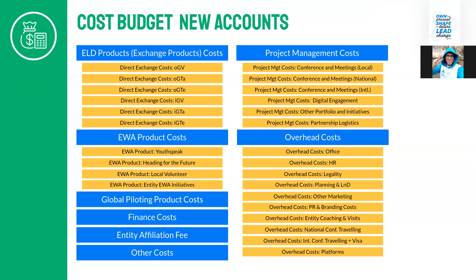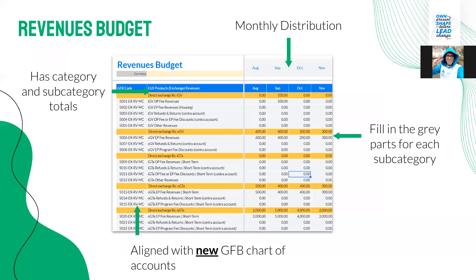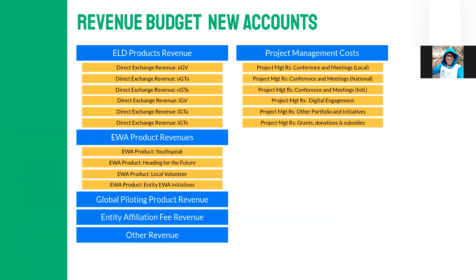Then we have the budget revenues. It's kind of the same structure — you have the data categories and subcategories, the monthly money distribution, following the new chart of accounts. We have the ELD or exchange revenues, the EWA revenues, global piloting product revenues, entity affiliation revenues (the money you gain from LCs as part of entity affiliation fees), project management, grants donations and subsidies, and also others and miscellaneous revenues.